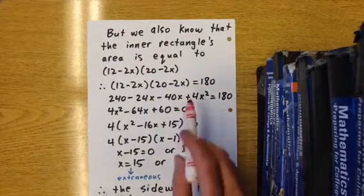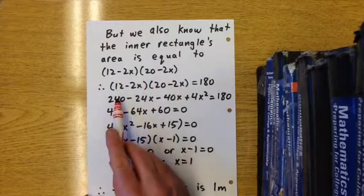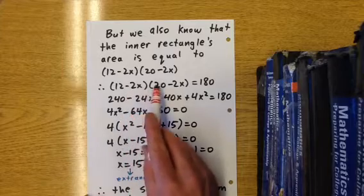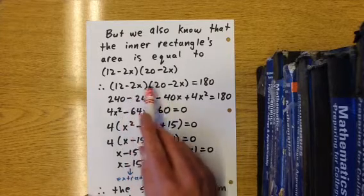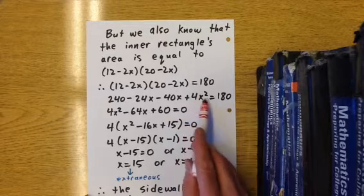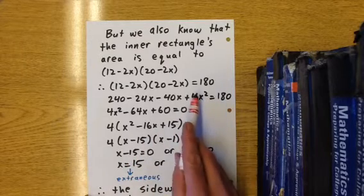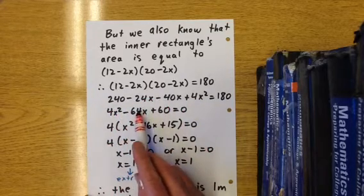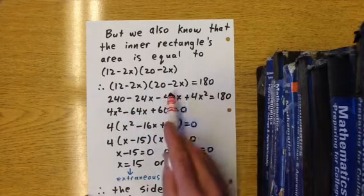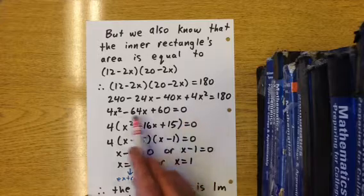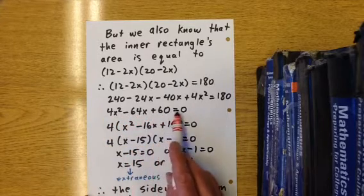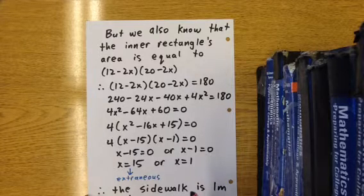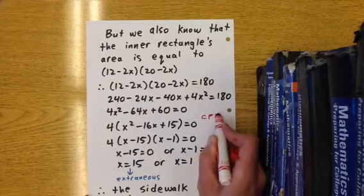12 minus 2x times 20 minus 2x equals 180. What we can now do is solve this equation. 12 times 20 is 240. 12 times negative 2x is negative 24x. Negative 2x times 20 is negative 40x. Negative 2x times negative 2x is positive 4x squared, and it equals 180. We reorder our terms, 4x squared minus 64x. We're going to subtract 180 from the other side to let it equal zero. So we have 4x squared minus 64x plus 60 equals zero. What we want to do now is factor that. Always start with common factoring. Common factor first.